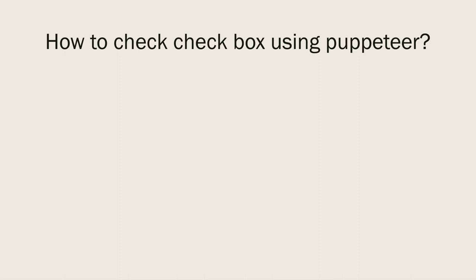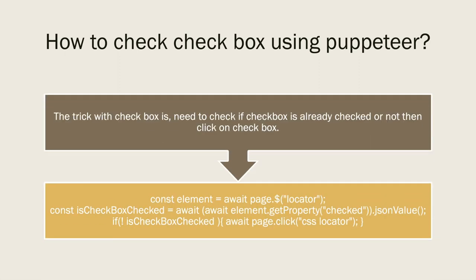Now, how to check a checkbox using Puppeteer — this is a tricky one. If you directly click on a checkbox, you don't know if it is already checked or not. So before checking a checkbox, you need to check its status first. You can get the locator, then await and get the property 'checked', convert it to a JSON value, and store it in a variable. If 'checked' is false, you click on it so the checkbox gets checked; if it is already true, you can print 'checkbox is already checked'.